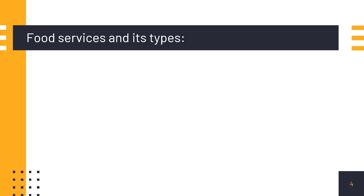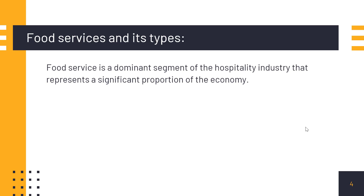Let's first talk about food service and its types. Food service is the dominant segment of the hospitality industry, representing a significant proportion of the economy. Since everyone eats food, restaurants are booming. Food is something people have to consume, which is why it is such a dominant segment — there is no other option, and the restaurant industry is really booming in terms of the overall economy.